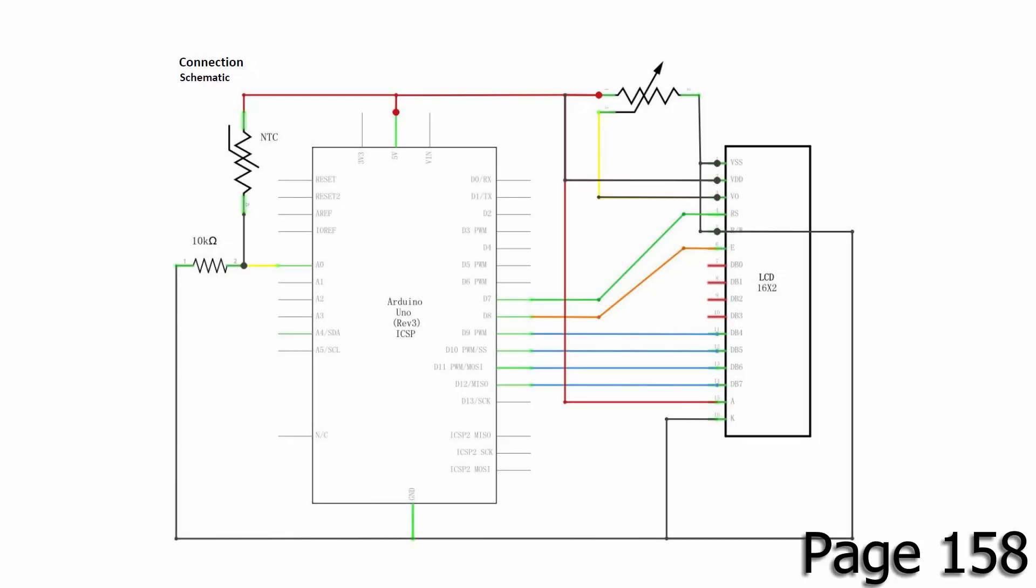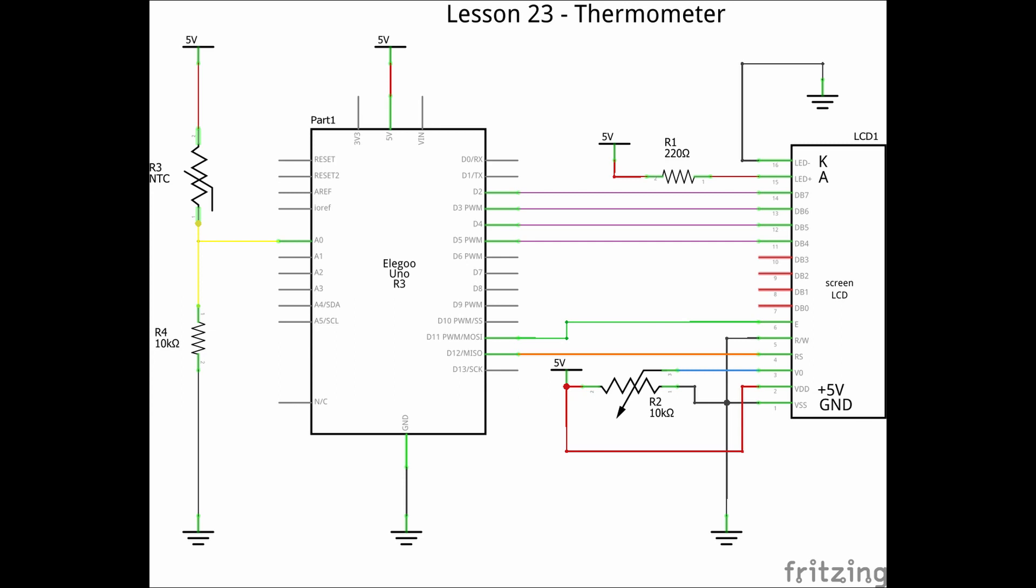On page 158 you'll see the following schematic. If you recall I changed this in Lesson 22 so we'll be using my revised schematic. The LCD is arranged the same way as in Lesson 22 and the thermistor and the 10k ohm resistor will be connected in series from power to ground acting like a voltage divider. A jumper will be connected to the location where they meet and up to pin A0.